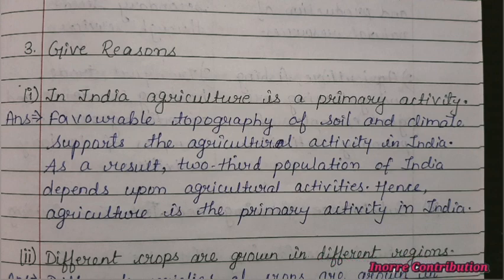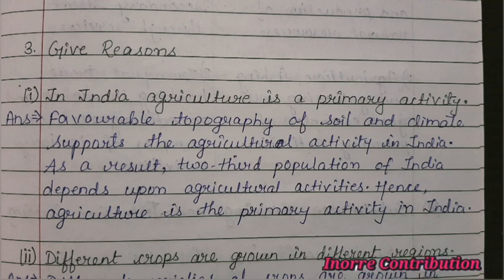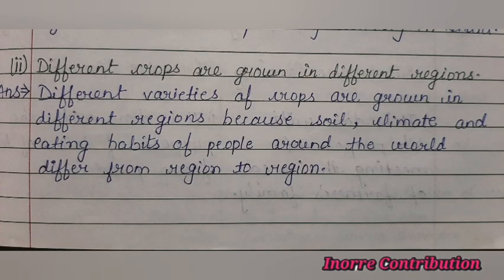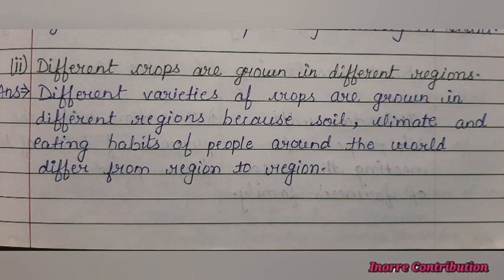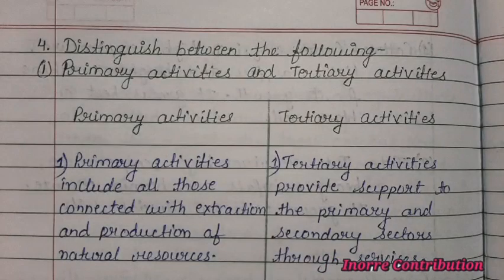Give reasons. First, in India agriculture is a primary activity — favorable topography of soil and climate supports agricultural activity in India; as a result, two-thirds of the population of India depends upon agricultural activities, hence agriculture is the primary activity in India. Second, different crops are grown in different regions — because soil, climate, and eating habits of people around the world differ from region to region.